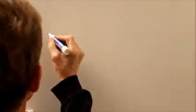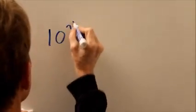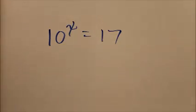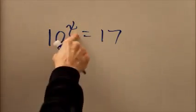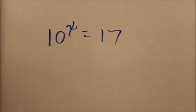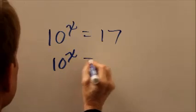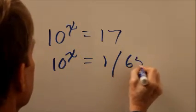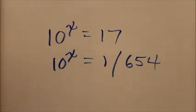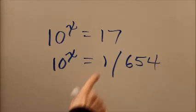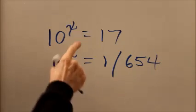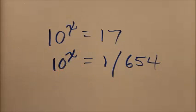Now you can try some other ones. 10 to the x equals 17. Take the logarithm of 17 on your calculator. And then you'll know what x is. You'll know what power of 10 equals 17. 10 to the x equals 1 over 654. Take 654, enter the 1 over x key to get 1 over 654. Then hit the log key. You'll solve for x.